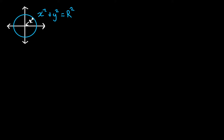If you have taken geometry, which I'm sure you have by now, you'll know that the area of this figure — this orange space — the area of this circle is going to be the constant pi times the radius squared. But how can we be exactly sure of this, except that we've been told this over and over again, and it is empirically the case?